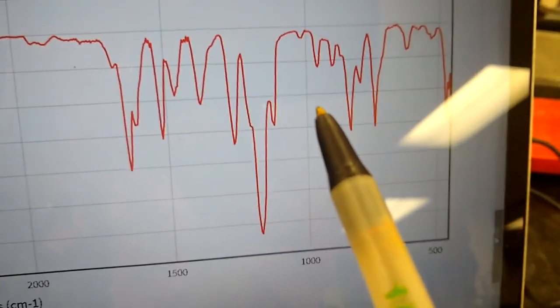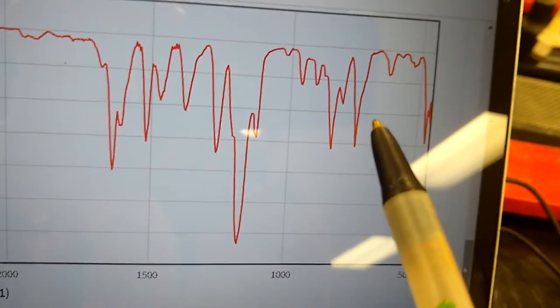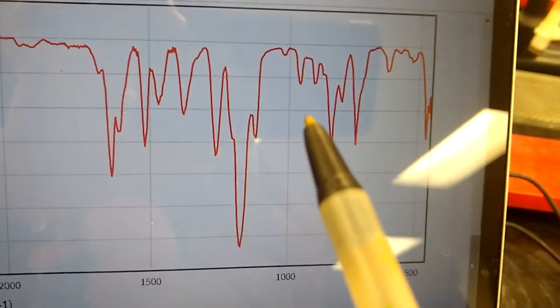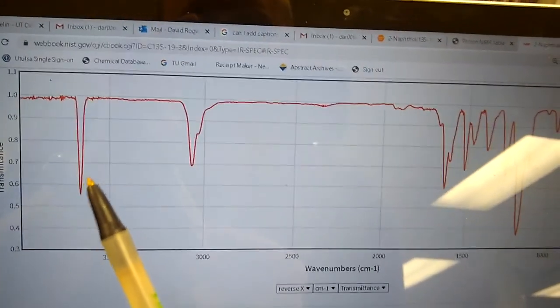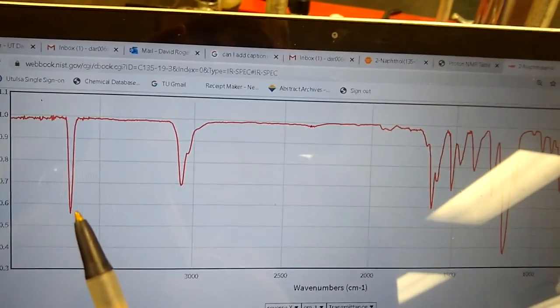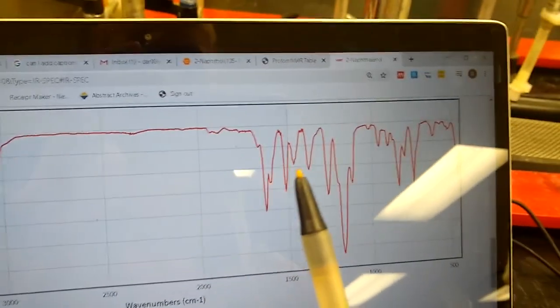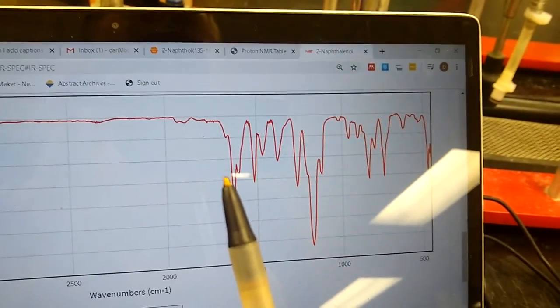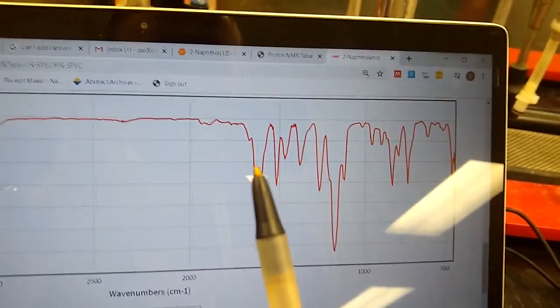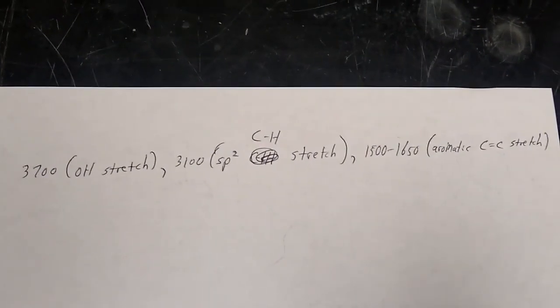Getting further to the right, you're getting into the fingerprint region, and that's usually not very informative, so you can for most cases just ignore that. So for the IR of two-naphthol, the only really valuable signals you would say: 3700, OH stretch; 3100, sp2 CH stretch; and then you could say just estimate 1500 to 1650, and that would be aromatic C double bond C stretch. Written out like something like this, and that would be good enough for me.